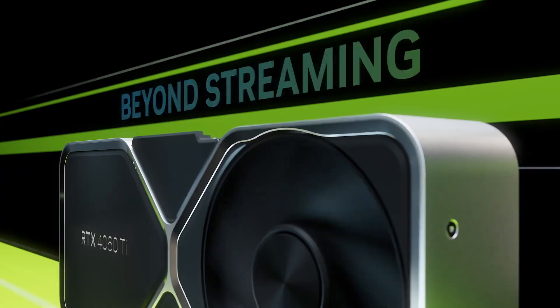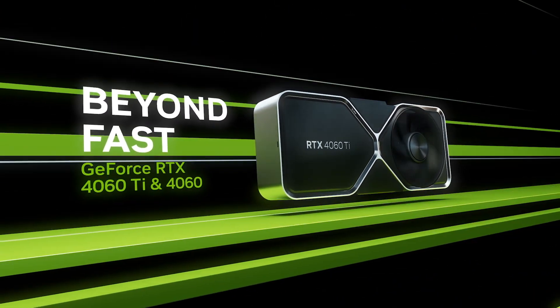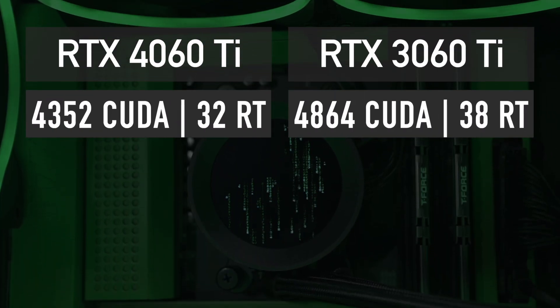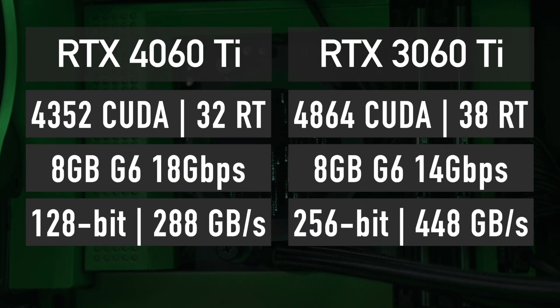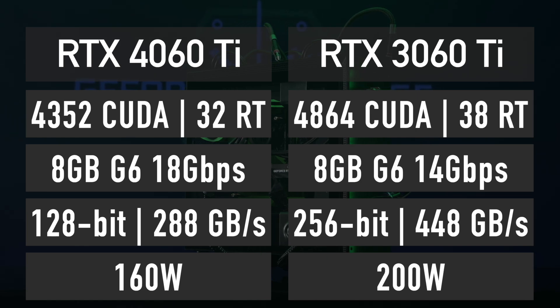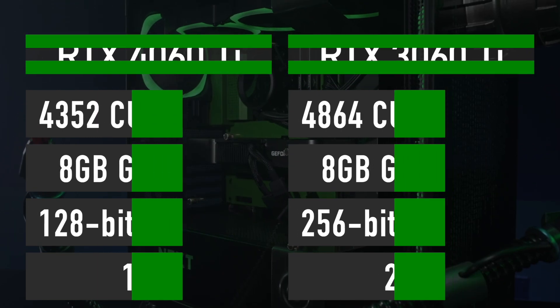In conclusion, the RTX 4060 Ti appears to be roughly 10% better than the 3060 Ti on average. This is a decent improvement, considering that the 4060 Ti features fewer CUDA cores and a smaller memory bus. Additionally, it offers a significant improvement in power efficiency, delivering 10% more performance while using 20% less energy.